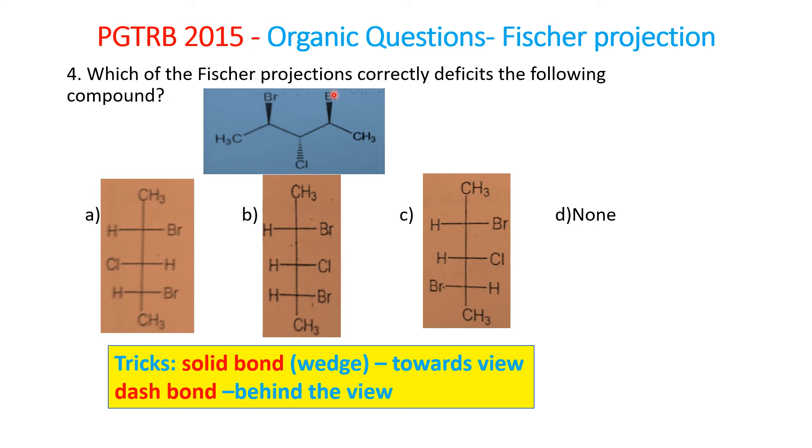See here, these two bromines are towards the view and one is away from the view. According to that, in option A, two groups are in the same plane and one is away from the plane. In option B, all three are in the same plane - this is not the right answer.